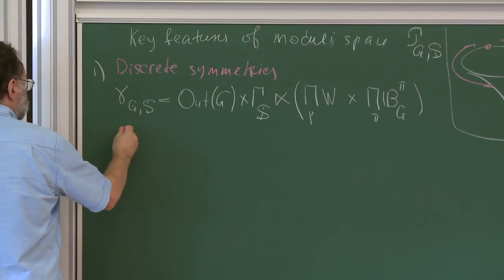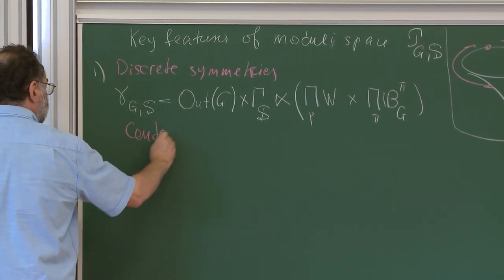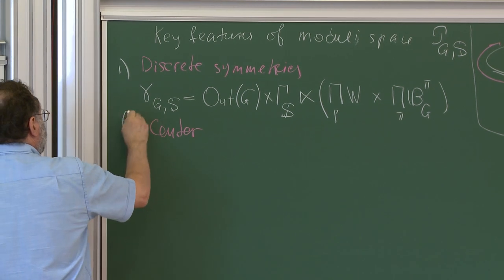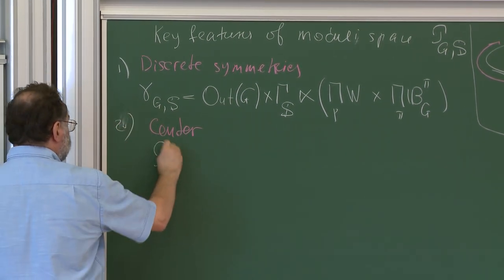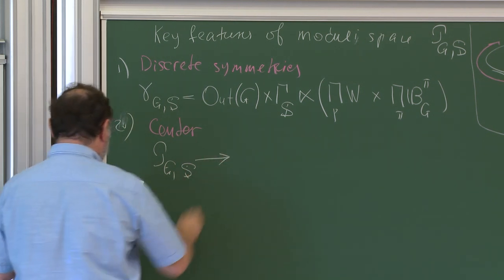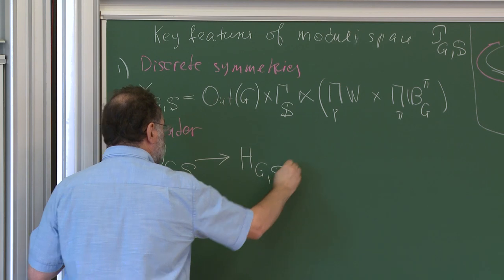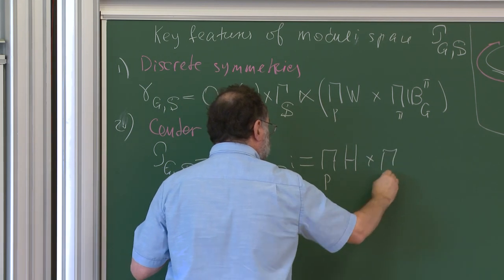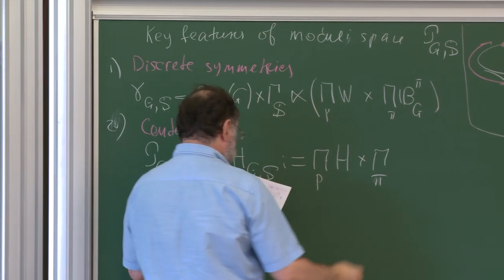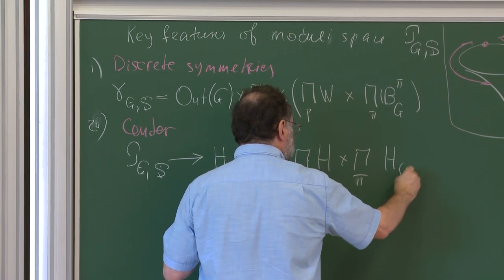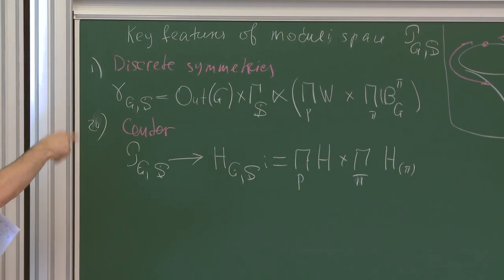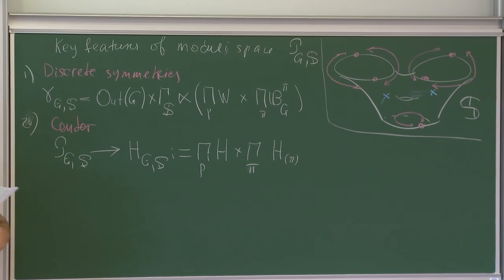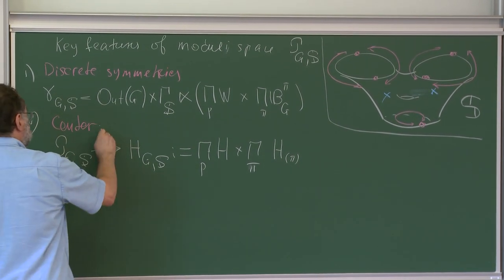The second feature of this space is that it has a center. The center is given via projection of the space to a torus, which we call AGS. It is defined as a product over punctures of Z-Cartan group and product over boundary components of Z-Cartan groups — now co-invariants of the Cartan groups by the action of W0, a reduced version of the Cartan group. The center is given via this projection.